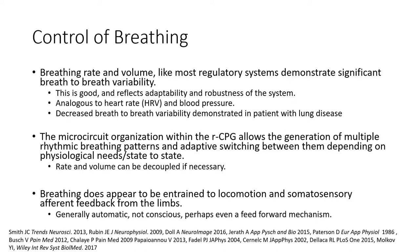A classic example of that is exercise. When we're exercising, we find the microcircuitry is a little bit different than at rest. Like most regulatory systems, breathing demonstrates significant breath-to-breath variability — that's a good thing. It's analogous to heart rate variability. We're going to have small fluctuations that reflect a pretty good and healthy system. Decreased breath-to-breath variability is something we observe in patients with lung disease, where the flexibility and robustness of the system just isn't the same — it's pathological.